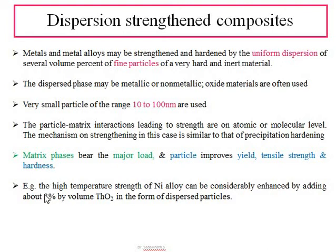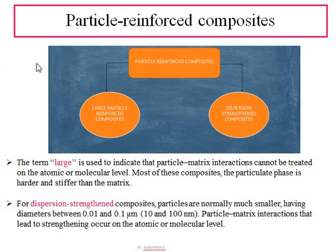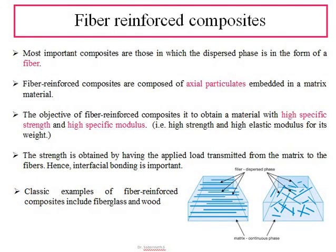One example is that the high-temperature strength of nickel alloy can be improved by adding 3% by volume of thorium dioxide (ThO₂) in the form of dispersed nanoparticles. These fine particles move into the nickel alloy, interact with the matrix, and arrest dislocation movement, thus improving hardness and high-temperature strength. This completes the topic of particle reinforced composites, and the next video will cover fiber reinforced composites.